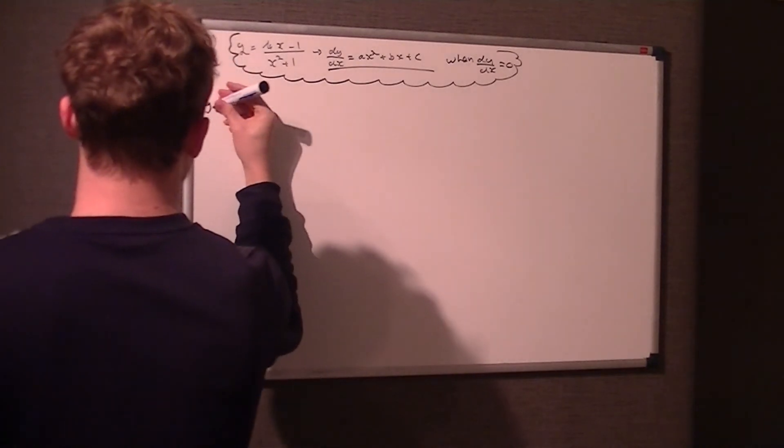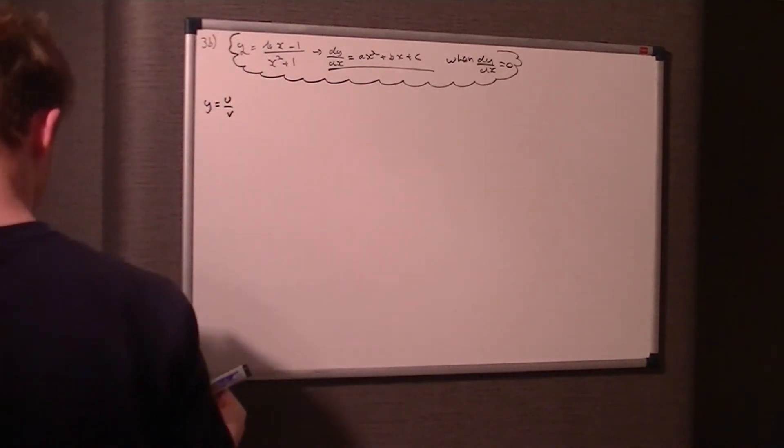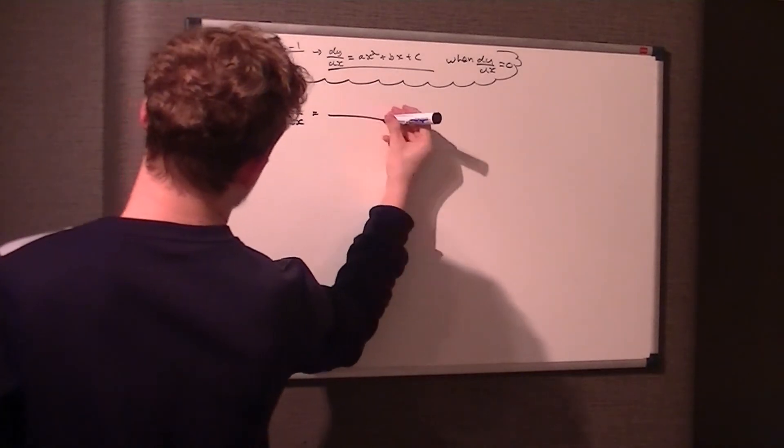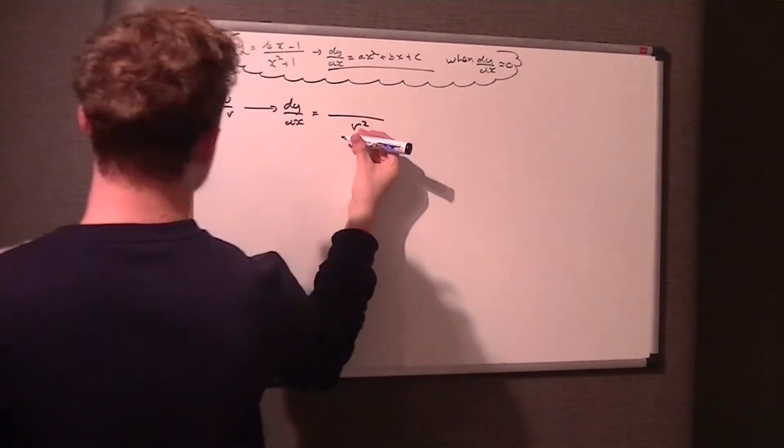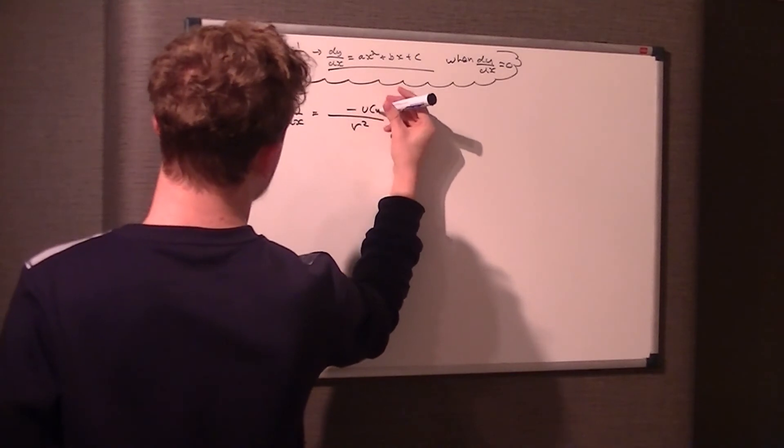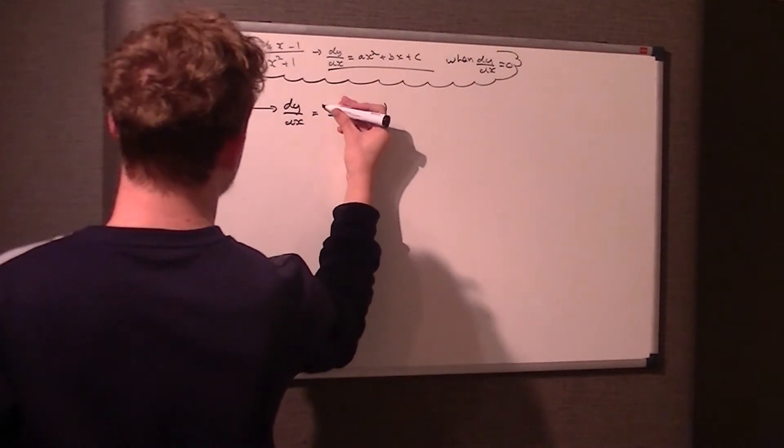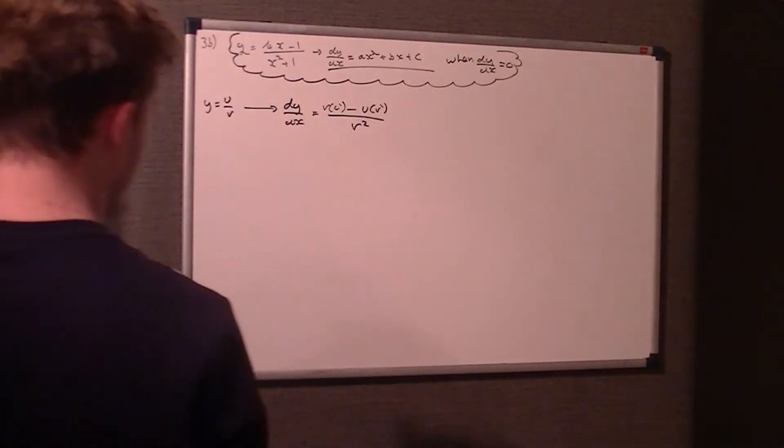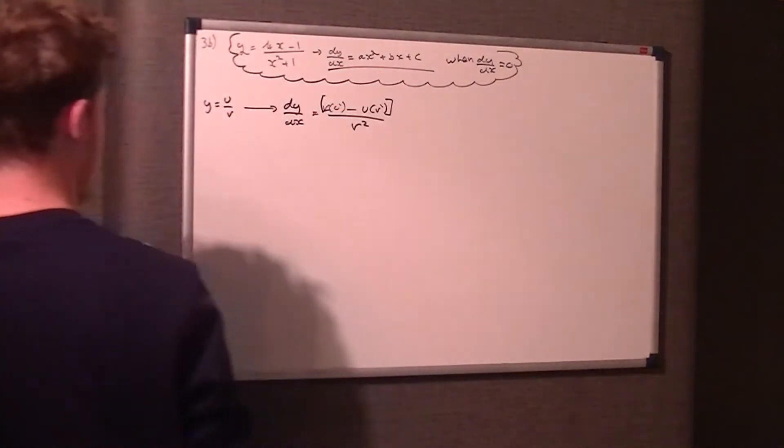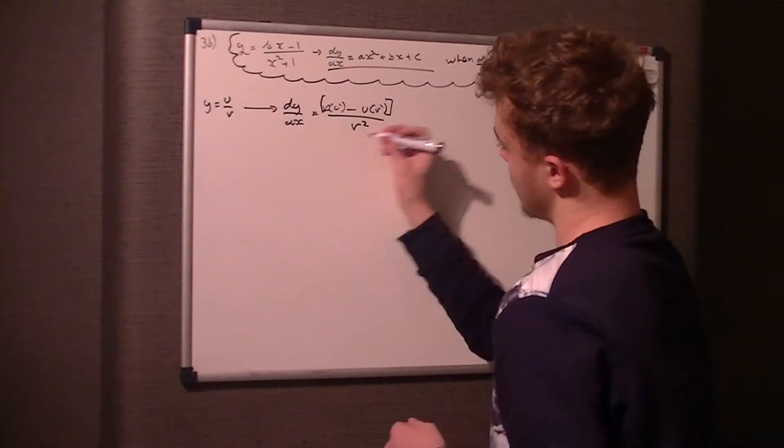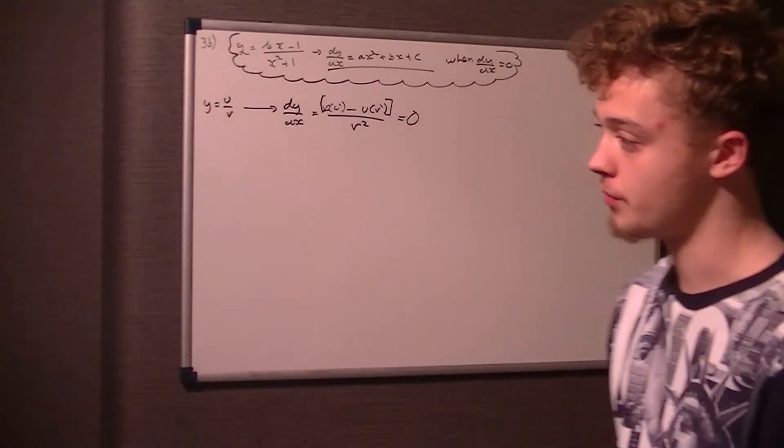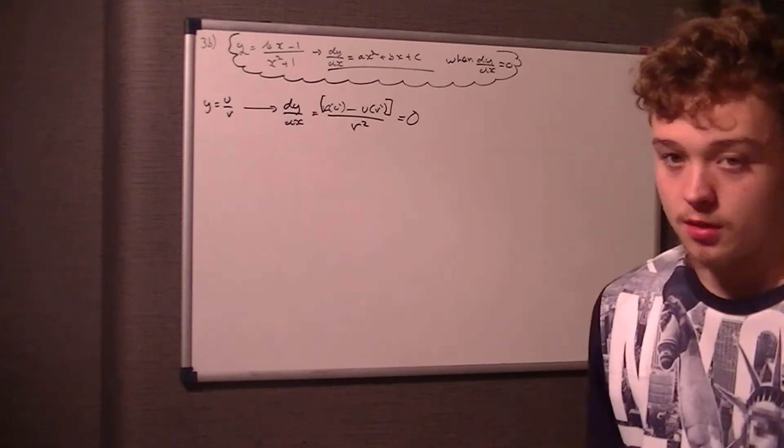Our quotient rule says when y = u/v, therefore dy/dx equals (vu' - uv')/v². You could be lazy and just do the numerator without the v² on the bottom, then multiply by v² later. However, I wouldn't recommend it for this question.